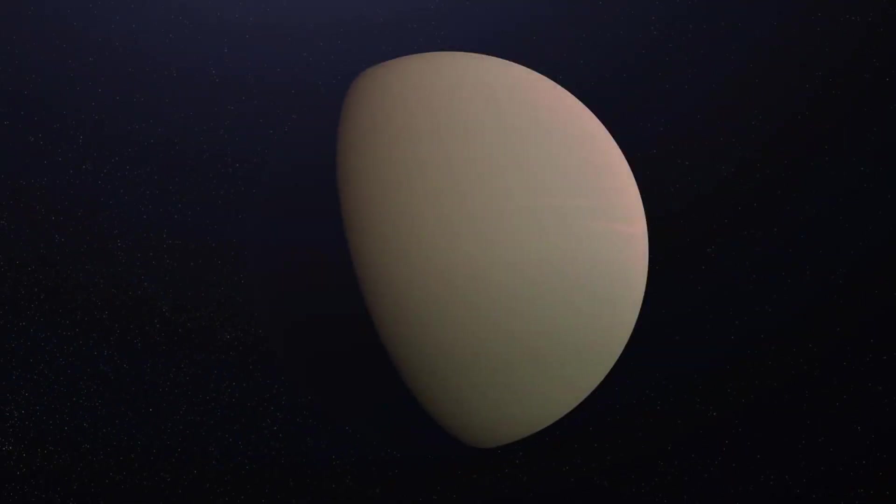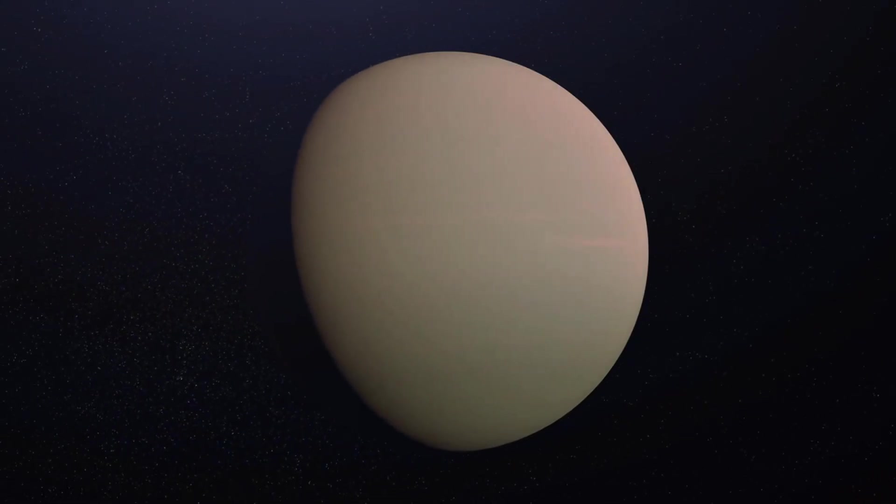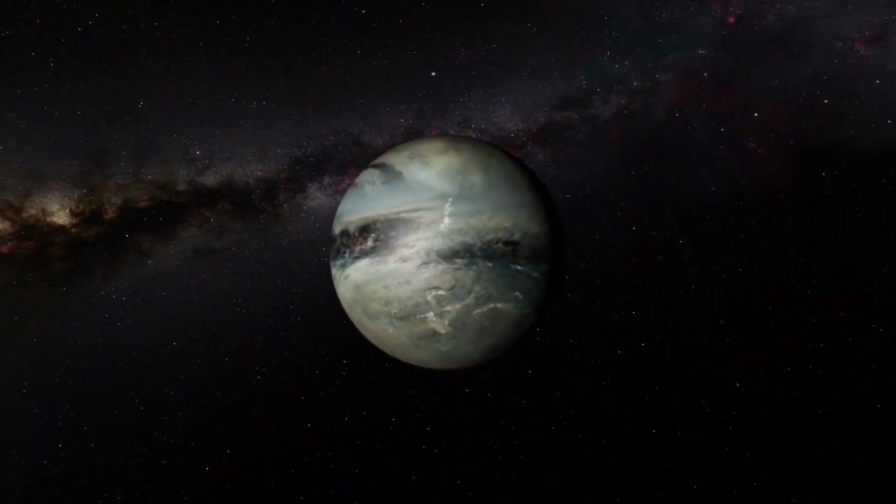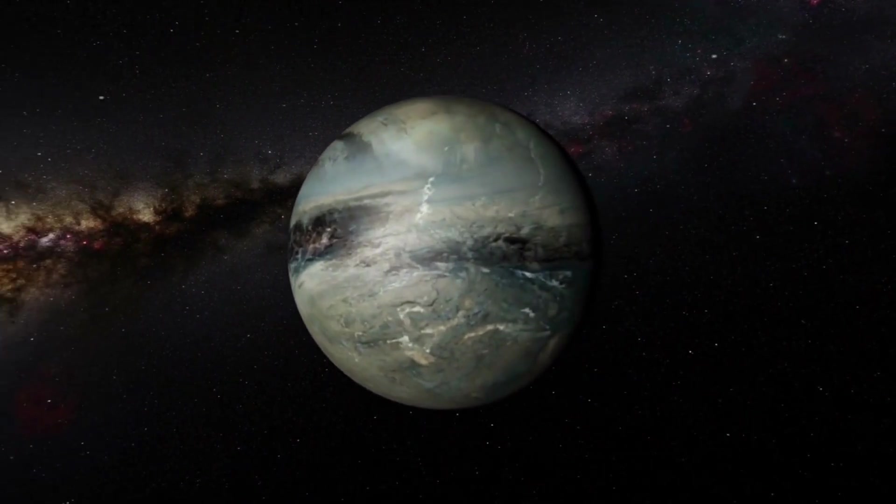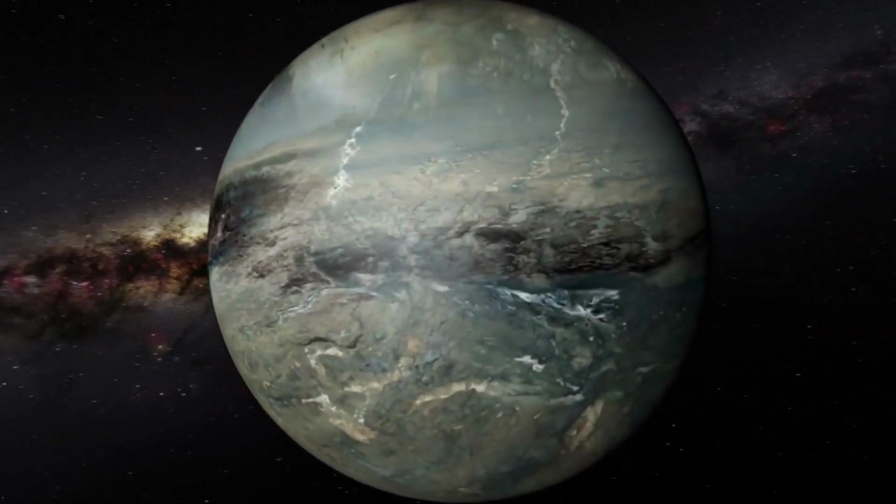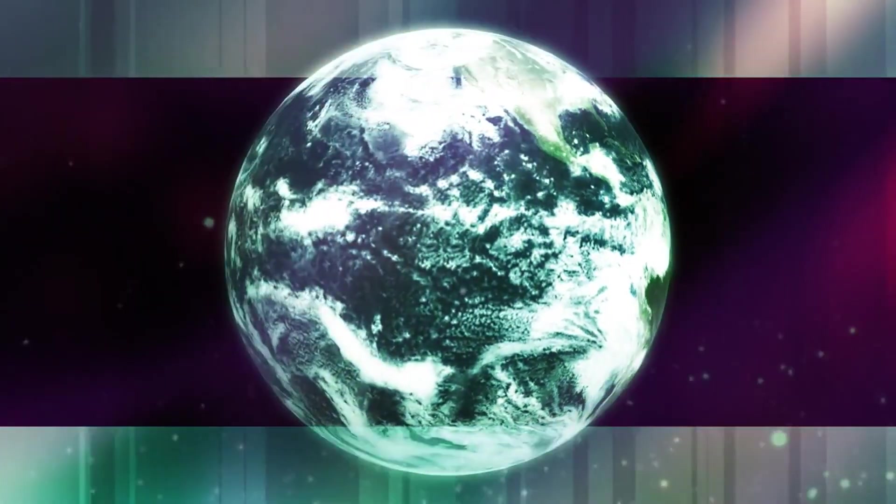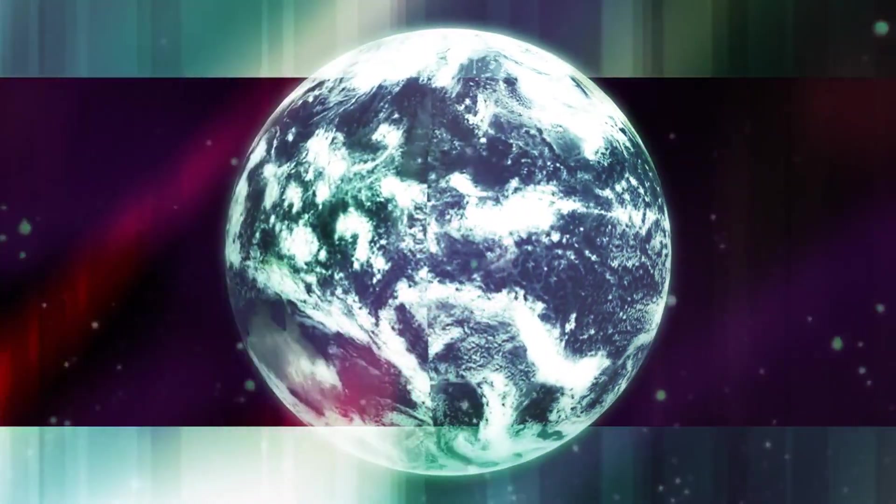While Pluto's orbit appears chaotic, numerical simulations highlight its technically chaotic nature. Minor deviations in initial conditions can lead to significant differences over millions of years. Despite this, the stability of Pluto's orbit is maintained, showcasing the delicate balance between chaos and order in our solar system. Predicting such cosmic events, however, poses significant challenges.